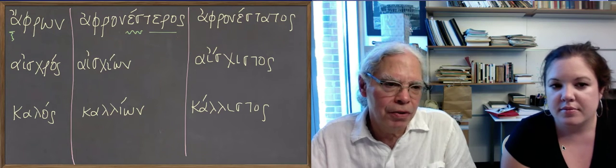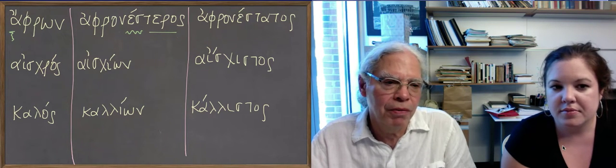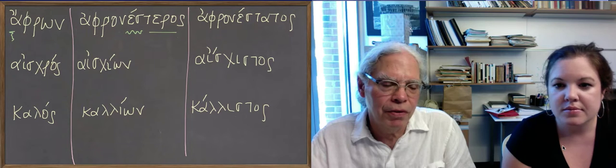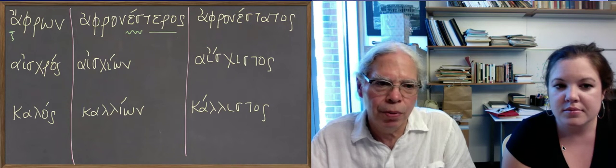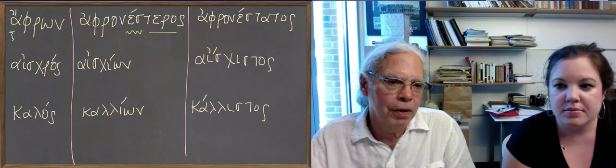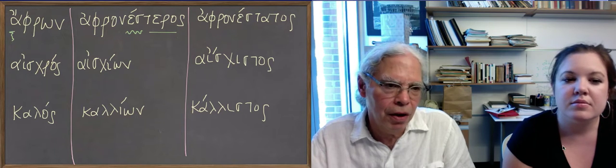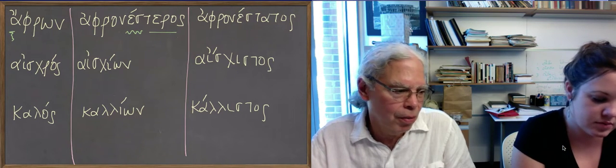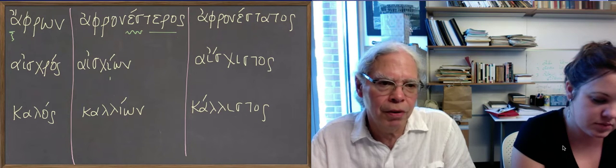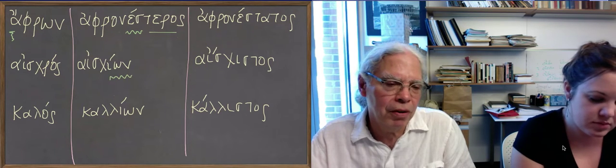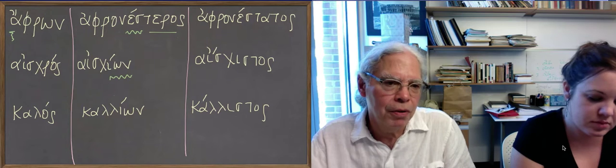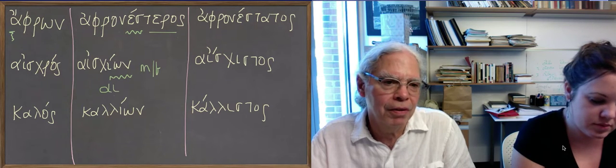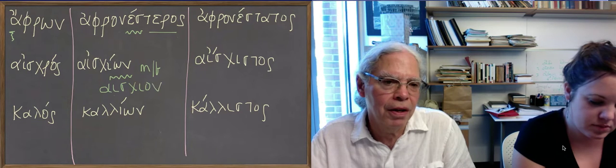When it comes to ishros and kalos and a bunch of other adjectives, what you have is a different set of suffixes for the comparative and the superlative. Ishros, remember, means ugly or disgusting. And ischion is the comparative form, so it means more ugly or more disgusting. That's the masculine and feminine form. The neuter one is ischion with an acute accent on the AI.